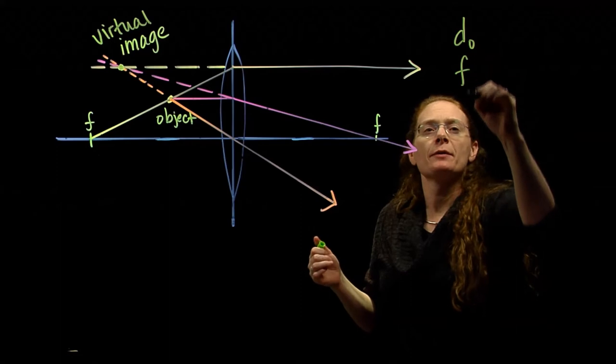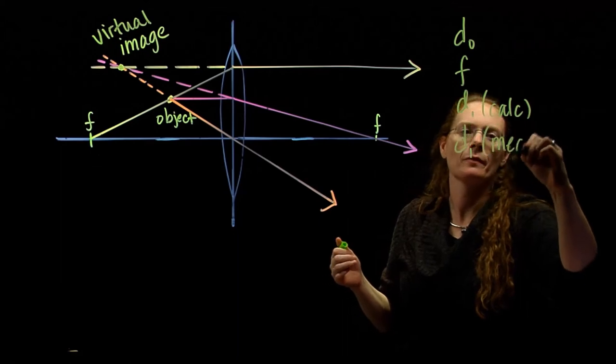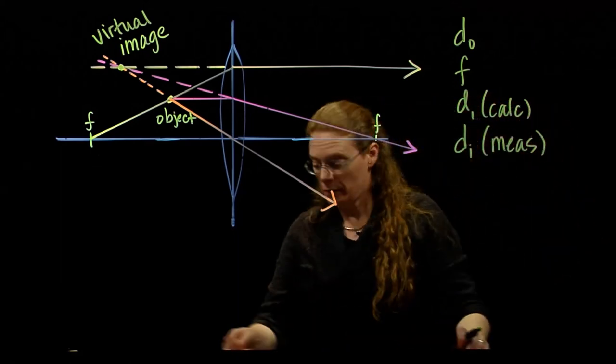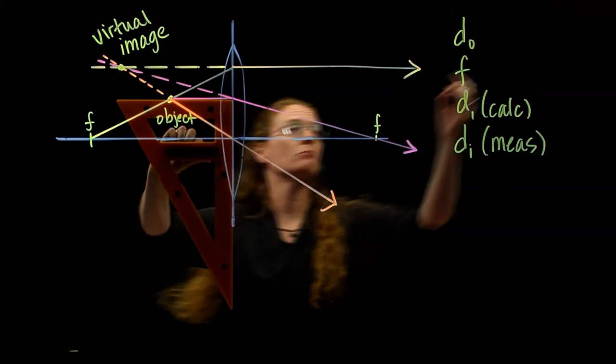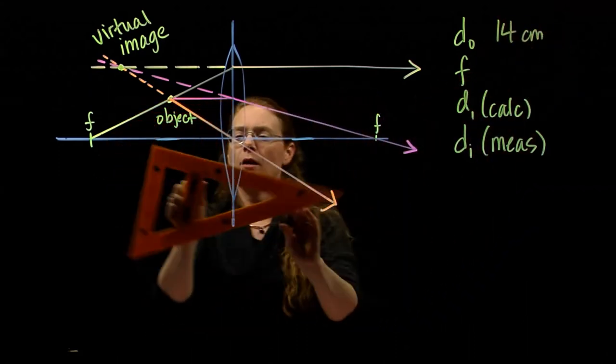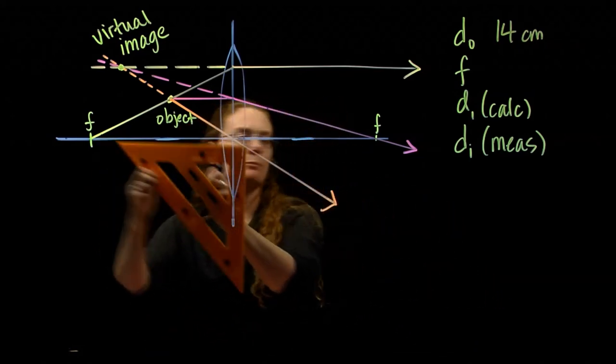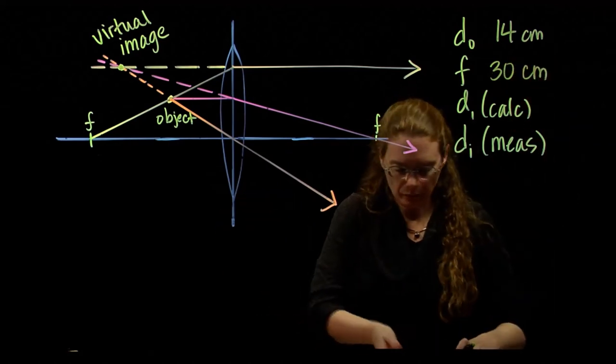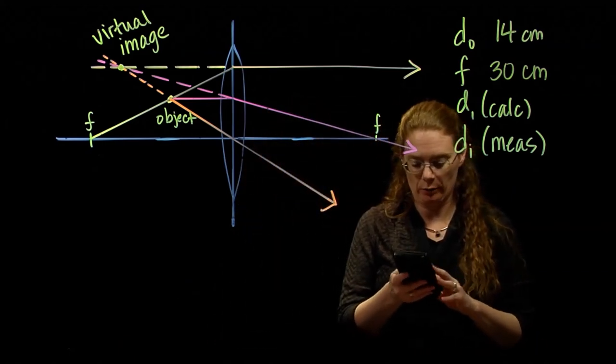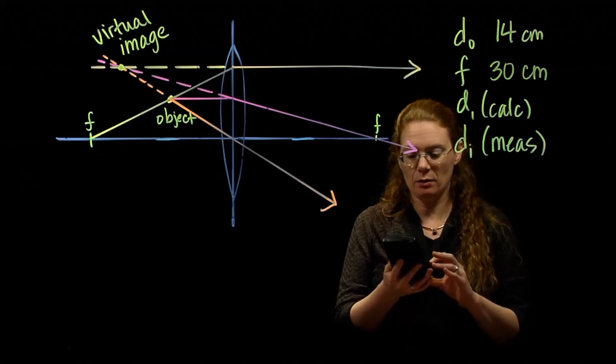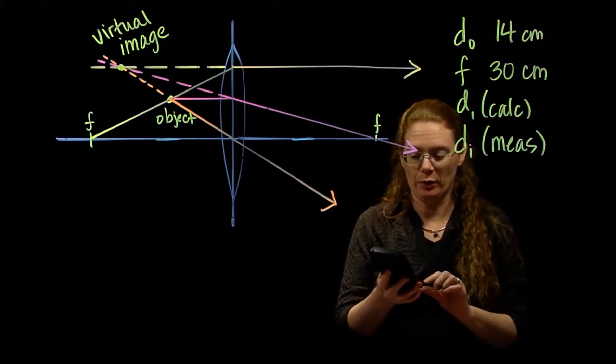We can do exactly the same stuff as before. We can figure out our calculated and our measured DI. DO is 14 centimeters, I'd say. And my focal, I need a bigger measuring device. 30 centimeters. We have DO and F. We can calculate what our image distance should be. 1 divided by 1 divided by F minus 1 divided by DO. And I'm really hoping for a negative. Because it's a virtual image, we should get negative. Yes! Good.